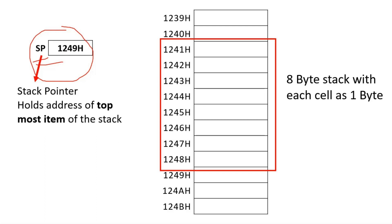For example, if two elements are already in the stack, the stack pointer will be pointing to 1247H. If four elements are in the stack, SP would be pointing to 1245H — because SP always points to the topmost element present.